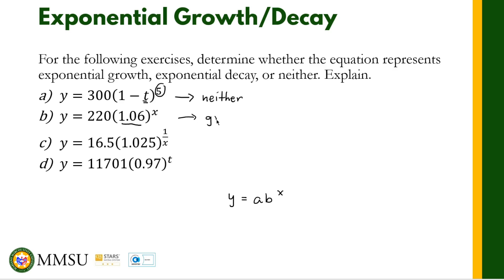For letter C, we have y is equal to 16.5 times 1.025 raised to (1 over x). The exponent is in fraction form, but our independent variable x is in the denominator of the exponent. This means it is not an exponential function, so the answer is neither.